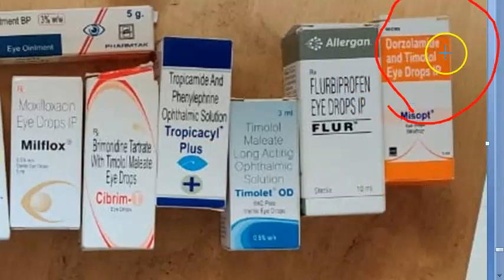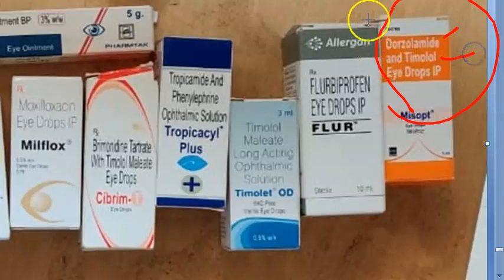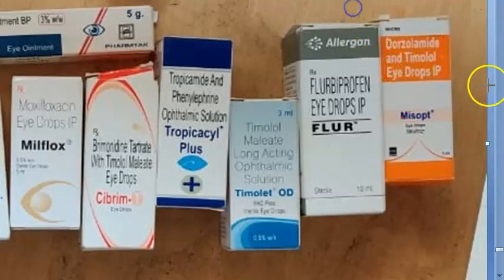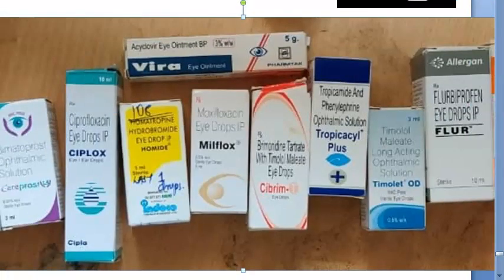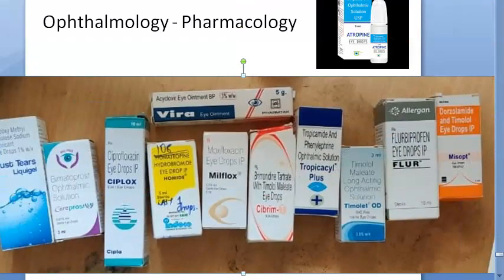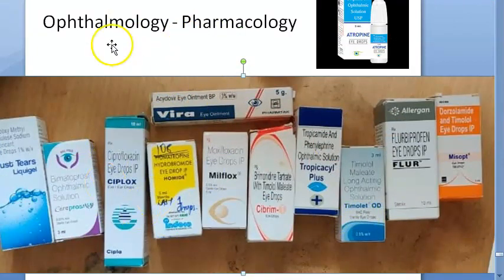Dorzolamide with timolol is a combination drug. Dorzolamide is a carbonic anhydrase inhibitor similar to acetazolamide, and timolol is a beta blocker. Together they form an anti-glaucoma combination given twice daily or less.